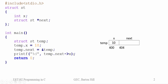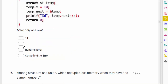When temp.next = &temp is executed, the address of temp (400) is stored in the pointer member next. Then we print temp.next->x: temp.next holds 400, and 400->x prints the value of member x at that address, which is 10. So the output is 10.